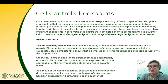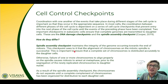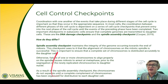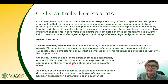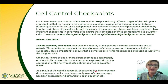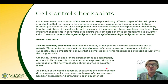The spindle assembly checkpoint, on the other hand, maintains the integrity of the genome occurring towards the end of mitosis. These checkpoints ensure that the alignment of chromosomes on the mitotic spindle is successful. It is important to ensure that a complete set of chromosomes is distributed accurately to the daughter cells. If there is a failure of one or more chromosomes to align properly on the spindle, it will cause mitosis to arrest at metaphase prior to the segregation of the newly replicated chromosomes to daughter nuclei. As a result, the chromosomes do not separate until a complete complement of chromosomes has been organized for distribution to each daughter cell.